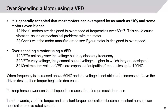It is generally accepted that most motors can overspeed by as much as 10% and sometimes even higher. Not all motors are designed for overspeed, so you should speak with your manufacturer to confirm. VFDs not only vary voltage, but they vary frequency. They cannot vary voltage higher than what they were designed for. Most medium voltage variable frequency drives are capable of outputting frequencies up to 120 hertz. When frequency is increased above 60 hertz, the voltage cannot be increased above the drive's design, and torque begins to decrease. To keep horsepower constant, if speed increases, torque must decrease. In other words, variable torque and constant torque applications become constant horsepower applications above rated speed.